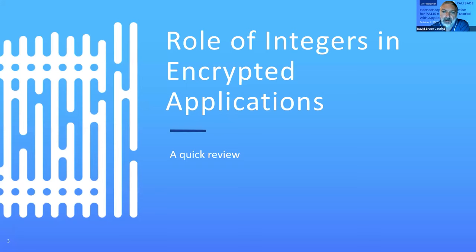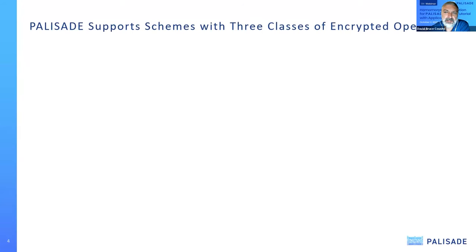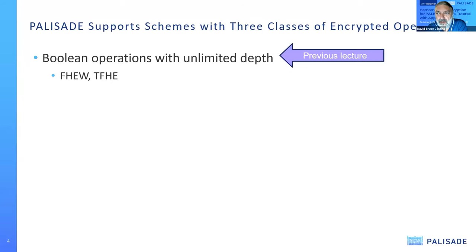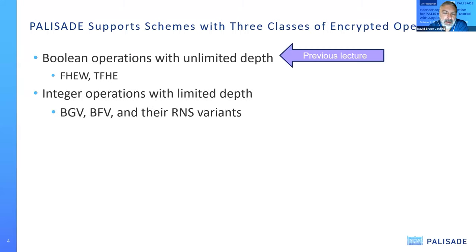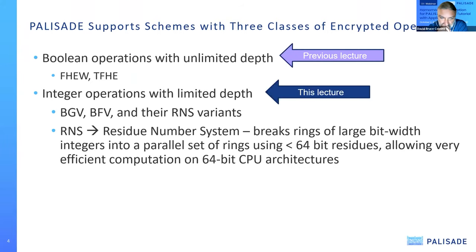Palisade supports basically three classes of schemes with encrypted operations. The first is Boolean operations with unlimited depth — FHEW and TFHE are the two schemes in the Palisade library, covered in the previous lecture. The next is integer operations with limited depth: BGV, BFV, and their RNS variants. That's this lecture.